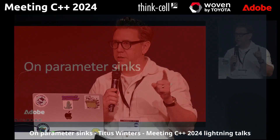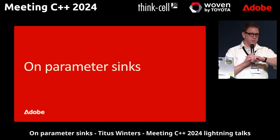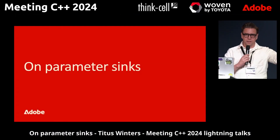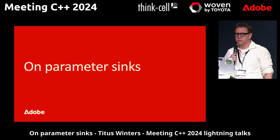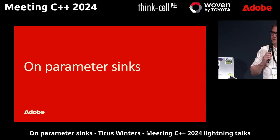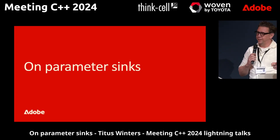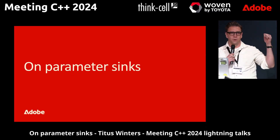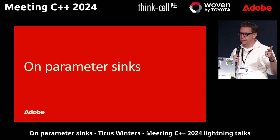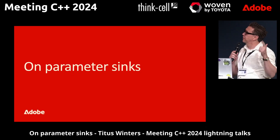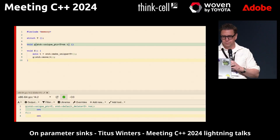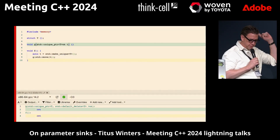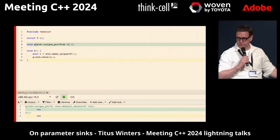I want to talk today about one of my biggest pet peeves in current C++ fashion, which is just sprinkling rvalue references all over the place. Specifically, I'm frustrated at people doing this in places where it either doesn't matter or is actively making the code less self-documenting, clear, and reliable. I saw a couple of examples of this at the conference already.